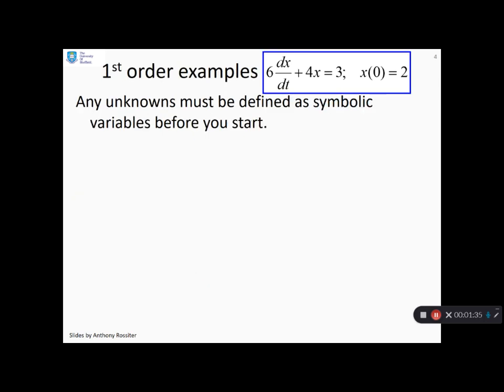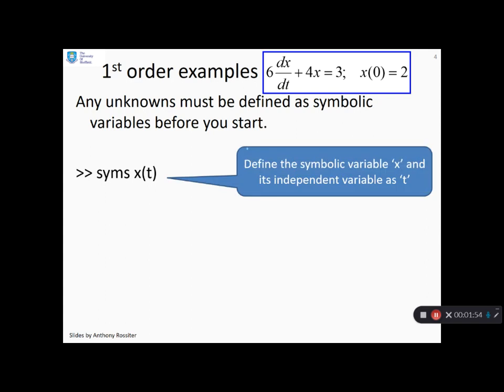So first example, we've got 6 dx/dt plus 4x equals 3 and x at time zero is 2. The first thing you need to do is define the symbolic variables you might need and here you're going to need a symbolic variable for x. So we use the command syms.